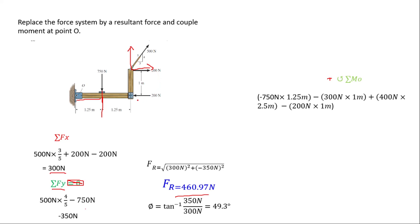The 400 newton force moving upward creates an anti-clockwise moment, which is positive. For the couple, we forget one of the paired forces and use only one. We use negative 200 newtons moving in the x direction clockwise to O, with a distance of 1 meter.